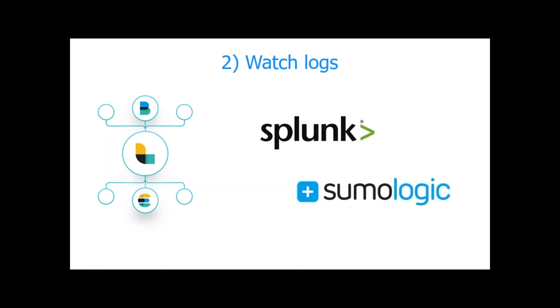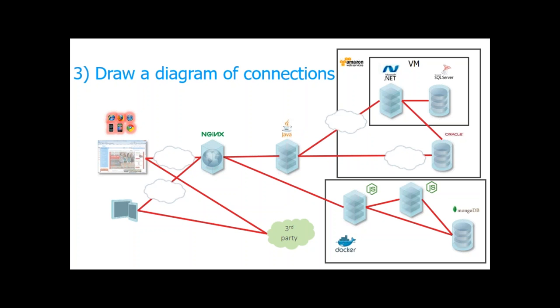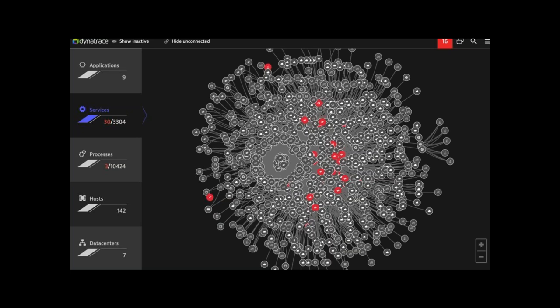The next thing: it's quite convenient to actually know how the whole components are connected together, because without knowing that, you're kind of in the dark — you only know one node is misbehaving but not how many nodes are really affected. So it's very convenient to draw such a map or diagram of your application. Nowadays this already becomes a problem — here's a screenshot from our software showing the diagram of connections between services at a customer.